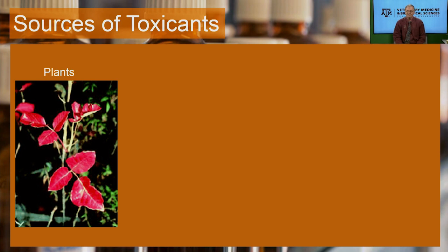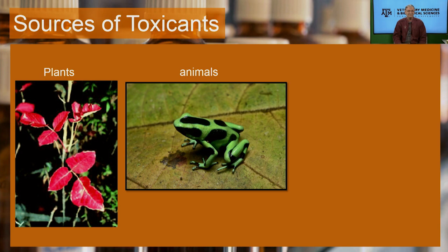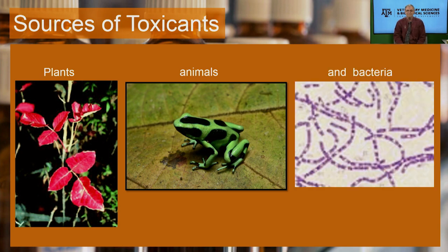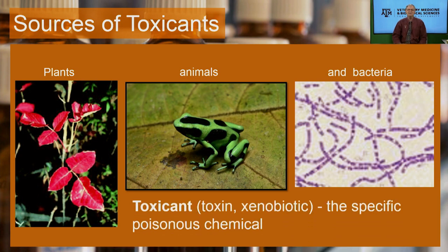What are some sources of toxicants? One is plants — look at that poison ivy, it's so beautiful in the fall. I've had poison ivy on my arm so much that I couldn't even bend my arm to brush my teeth. Another source is animals — that little frog, don't lick him, don't eat him; the birds know not to eat that frog either, there are poisons in his skin. Also, bacteria is another source — this is anthrax; they produce poisons that are toxic to us. That's a toxicant, toxin, xenobiotic — another name for the toxic chemical in each of these different sources.